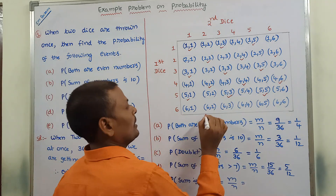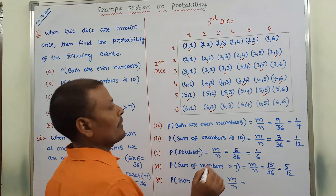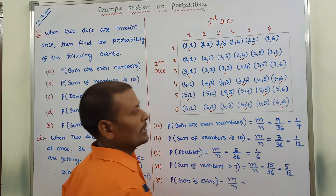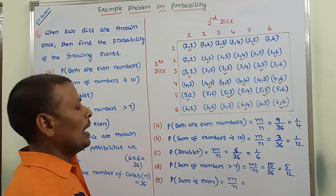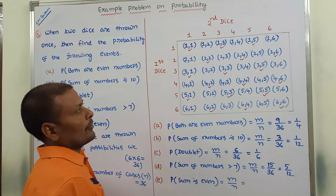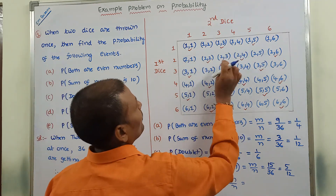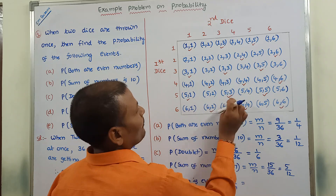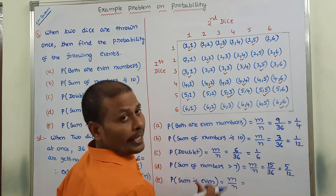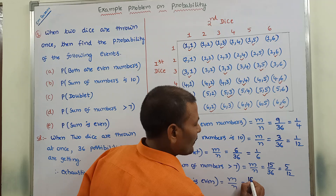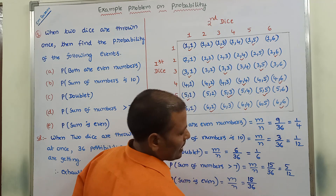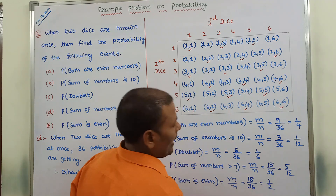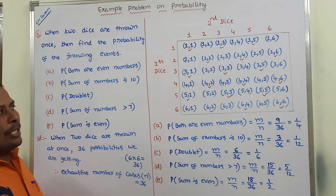Additional favorable cases: 6+2=8 (even), 6+4=10 (even), 6+6=12 (even). The favorable number of cases is 18 and the total exhaustive number of cases is 36. So 18 by 36 equals 1 by 2. In this way we solve any problem when two dice are thrown.